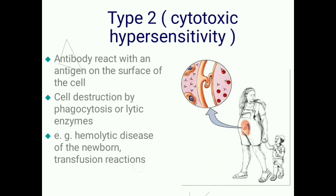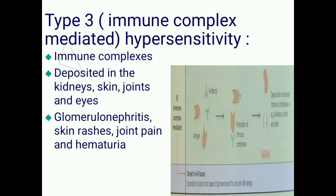Type 3 hypersensitivity, also known as immune complex mediated hypersensitivity, involves immune complexes that are deposited in kidneys, skin, joints, and eyes. In the kidneys they produce glomerulonephritis and hematuria; in the skin they cause skin rashes; and in joints they cause joint pain.